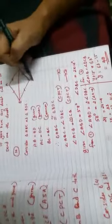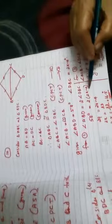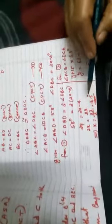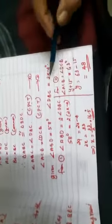So we can write 2DBC. That is 58 degrees is equal to 2 into 2X minus 4. Or 29 is equal to 2X minus 4. Or X is equal to 16.5. Similarly,